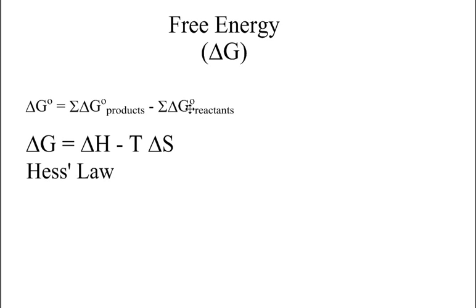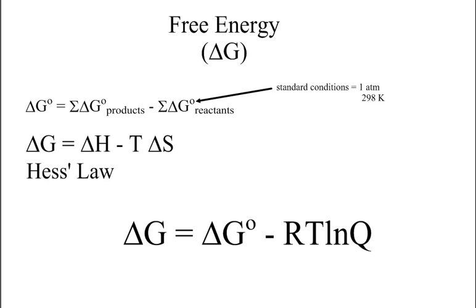Remember that the standard symbol means we're at standard conditions, which is 298 Kelvin and 1 atmosphere. So what happens if we are not at standard conditions? There's a formula for that too. Standard conditions are 1 atmosphere and 298 Kelvin. If we are not at those standard conditions, we have a separate formula.